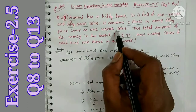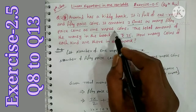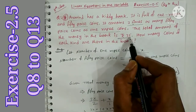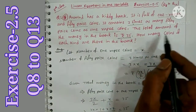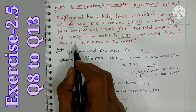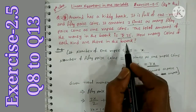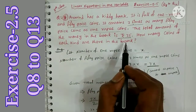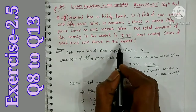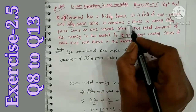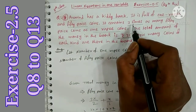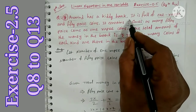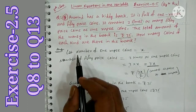The total of 50 Paise coins and 1 Rupee coins amounts to 35 Rupees. How many coins of each kind are there in the bank? The condition given is that 50 Paise coins are 3 times the number of 1 Rupee coins.